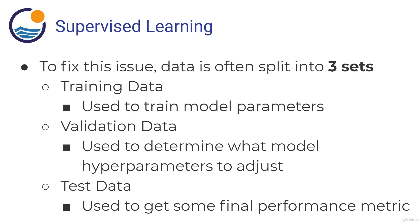To fix this issue, the data — especially in neural networks and deep learning — is often split into three sets: training data, validation data, and then test data. We introduce this in-between step of validation. The training data is used to train the model parameters, where the model gets to look at the features, look at the correct output, and fit to that training data. Then the validation data — which was kind of our test data from before — is used after training to check performance, and based on that we go back and adjust our models, perhaps adding more neurons or layers or changing the architecture of the network.